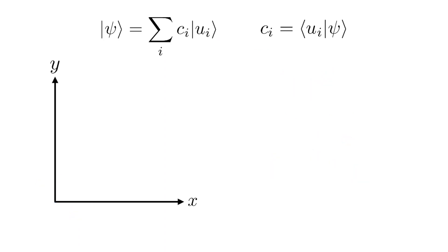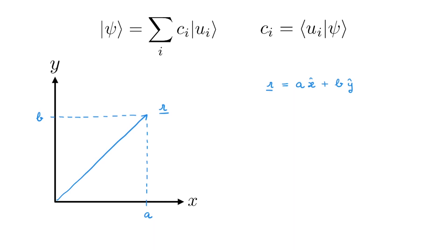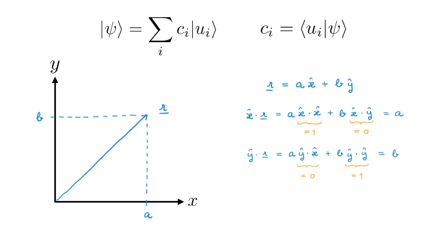We can extend our analogy to compare the representation of vectors to the representation of kets. Consider a vector r whose components in the xy coordinates are a and b. We know that r = a x̂ + b ŷ in the xy basis. We also know that to obtain the expansion coefficients we project the vector r on the basis vectors: x̂ · r gives this, and then using the orthonormality of the basis we obtain a. We can similarly obtain b by projecting r on ŷ. The r vector is analogous to the ket |ψ⟩, and the expansion in the xy basis is analogous to the expansion in the u basis. The a and b coefficients are given by the projection of the vector onto the basis vectors calculated using the scalar or dot product. By comparison, the c expansion coefficients are given by the projection of the ket onto the basis states, and this is what the scalar product looks like in the bra-ket notation.